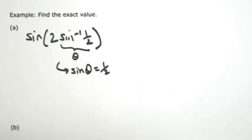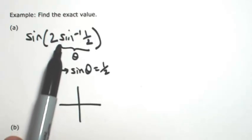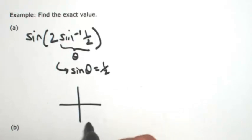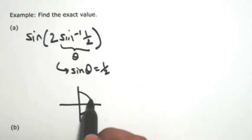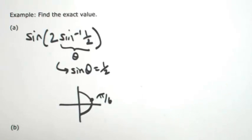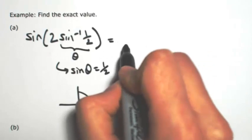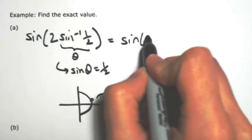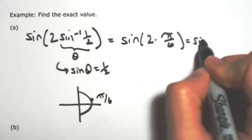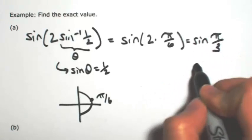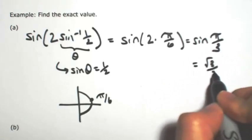That's really all that means. So then on the unit circle, we're talking about inverse sine — the outputs can only be in the first to the fourth quadrant. So I'm looking for where the y coordinate is 1 half, which is at pi over 6. So this question is really asking for the sine of twice pi over 6, or the sine of pi over 3, which is the square root of 3 over 2.